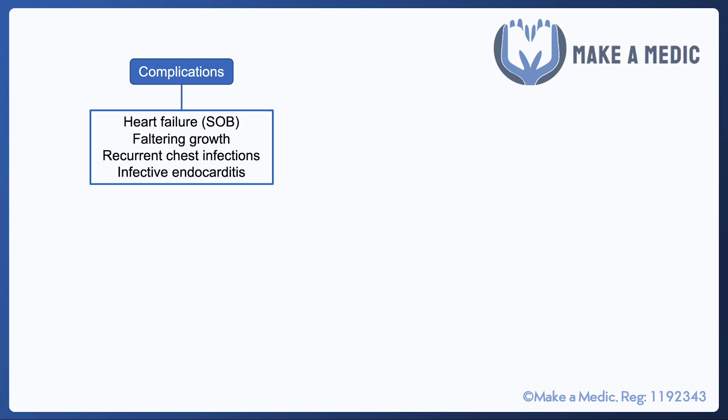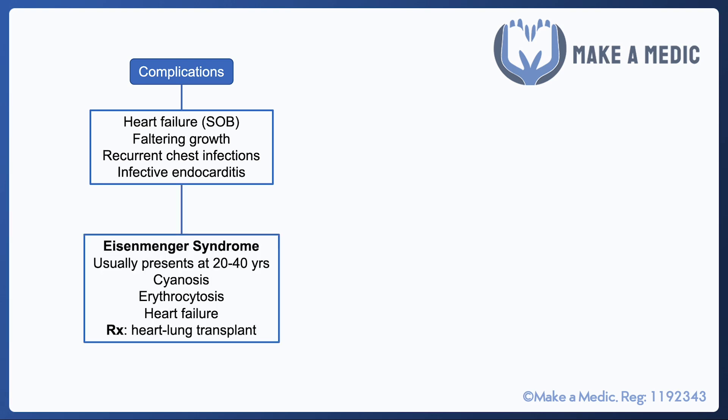The reason that these acyanotic heart diseases are important is that they can cause certain complications. They can lead to heart failure with similar manifestations as in adults, but in children it can cause shortness of breath and affect their growth, as feeding may be impaired. They may also get recurrent chest infections, and having a structural abnormality within the heart predisposes them to infective endocarditis.